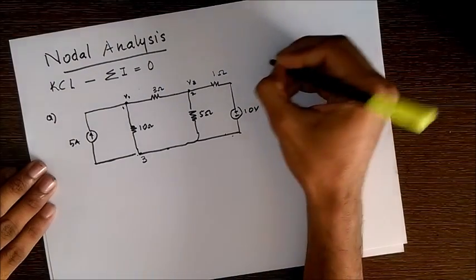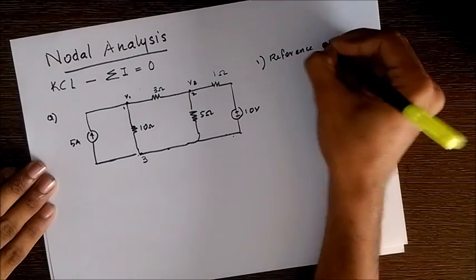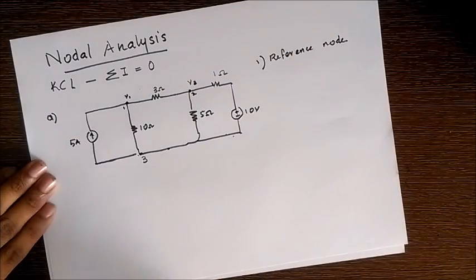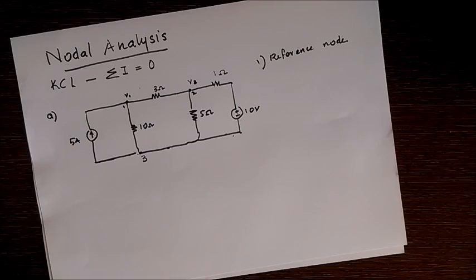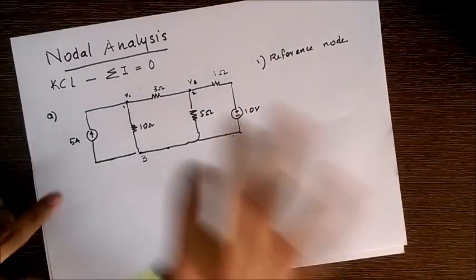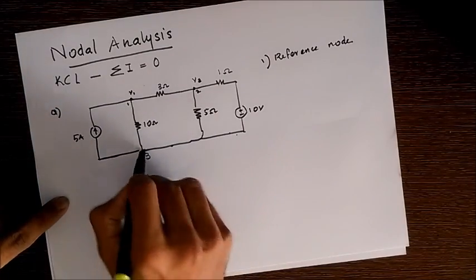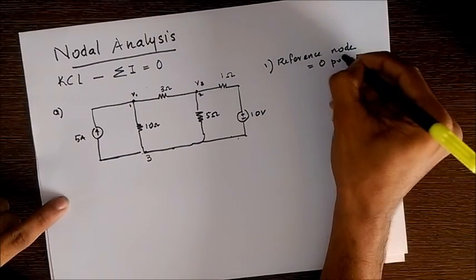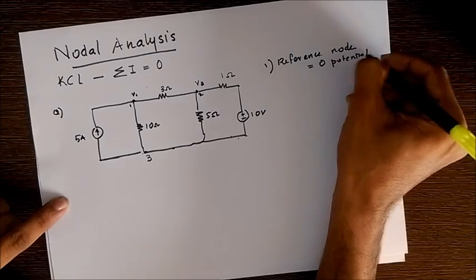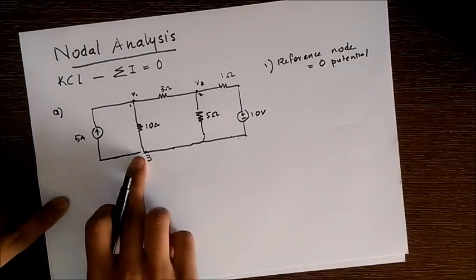Now we have to assign a reference node. Ideally we should take it as the node which has the most number of elements or branches coming to it. So here it is node three, and we assign it as zero potential. This is our reference node and we measure the voltages with respect to node three.